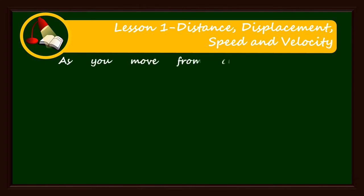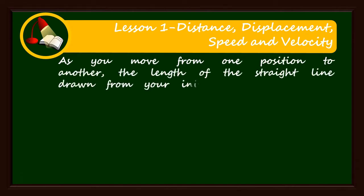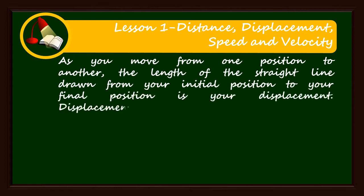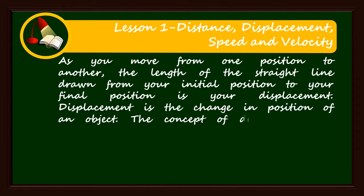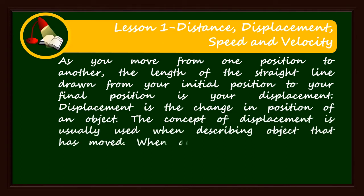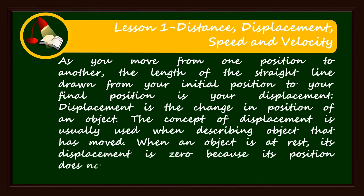As you move from one position to another, the length of the straight line drawn from your initial position to your final position is your displacement. Displacement is the change in position of an object. The concept of displacement is usually used when describing objects that have moved. When an object is at rest, its displacement is zero because its position does not change no matter how much time has elapsed.